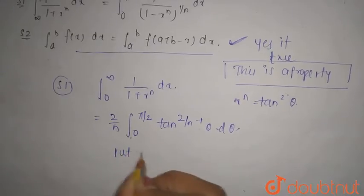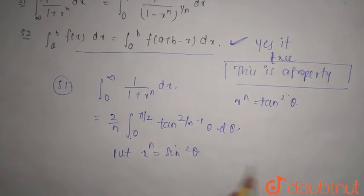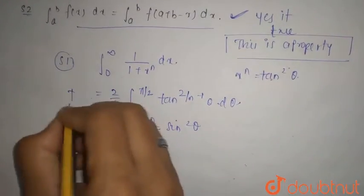Now, putting x^n is equal to sin square theta. What you will get? That is for I₁. This is what is your I₁.